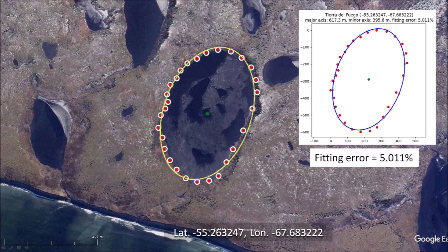This Thermokarst lake had a fitting error of 5%. In general, the ellipse fitting procedure with the fitting error calculation can be used to distinguish Carolina bays from other geological structures that are claimed to be like the bays.